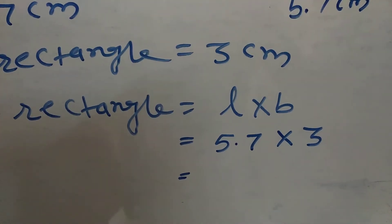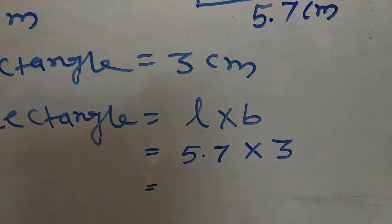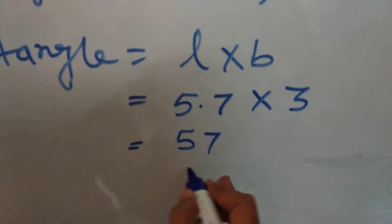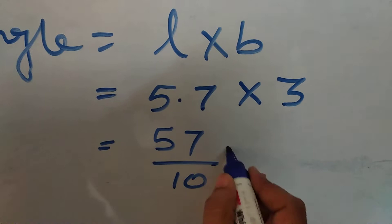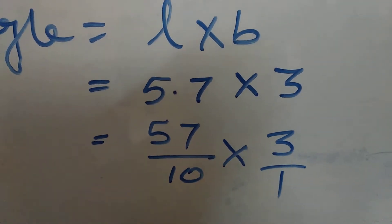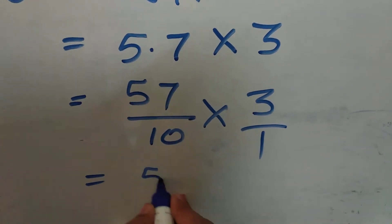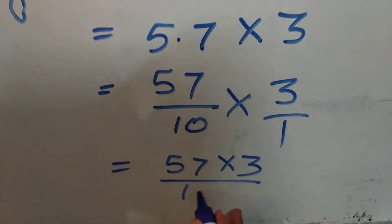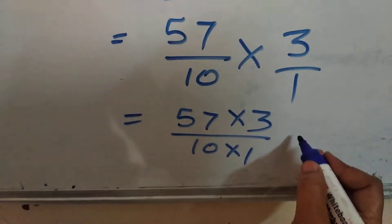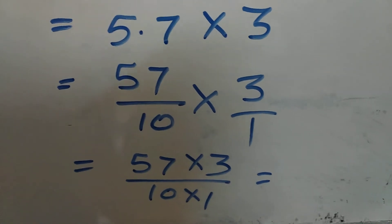Students here, carry out the multiplication of decimal. First, convert this decimal into fraction and then carry out the multiplication of a fraction that is 57 multiplied by 3 upon 10 multiplied by 1. So, 57 multiplied by 3,